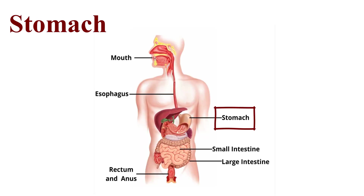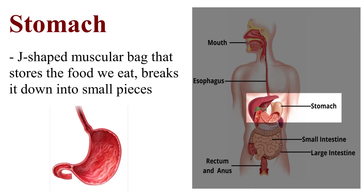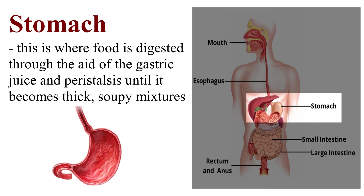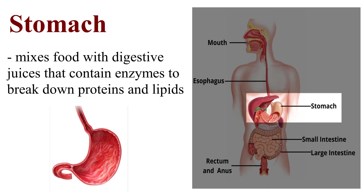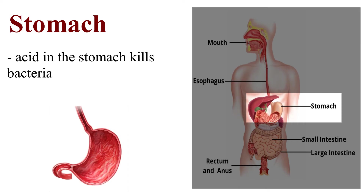The Stomach is a J-shaped muscular bag that stores the food we eat and breaks it down into small pieces. Food is digested through the aid of gastric juice and peristalsis until it becomes a thick, soapy mixture. The bolus is now referred to as chyme, mixed with chemical substances. Enzymes break down proteins and lipids, and acid in the stomach kills bacteria.